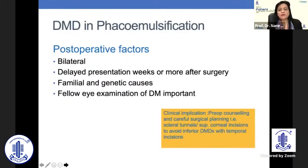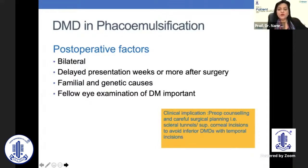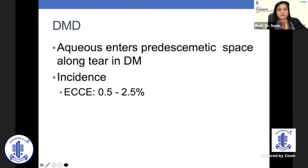It is important that preoperative counseling and careful surgical planning should be done, especially in cases which have loose DMDs. There you would like to go for scleral tunnel or superior corneal tunnels to avoid inferior DMDs with temporal incisions, which will then need SF6 or C3F8 gas as opposed to air.